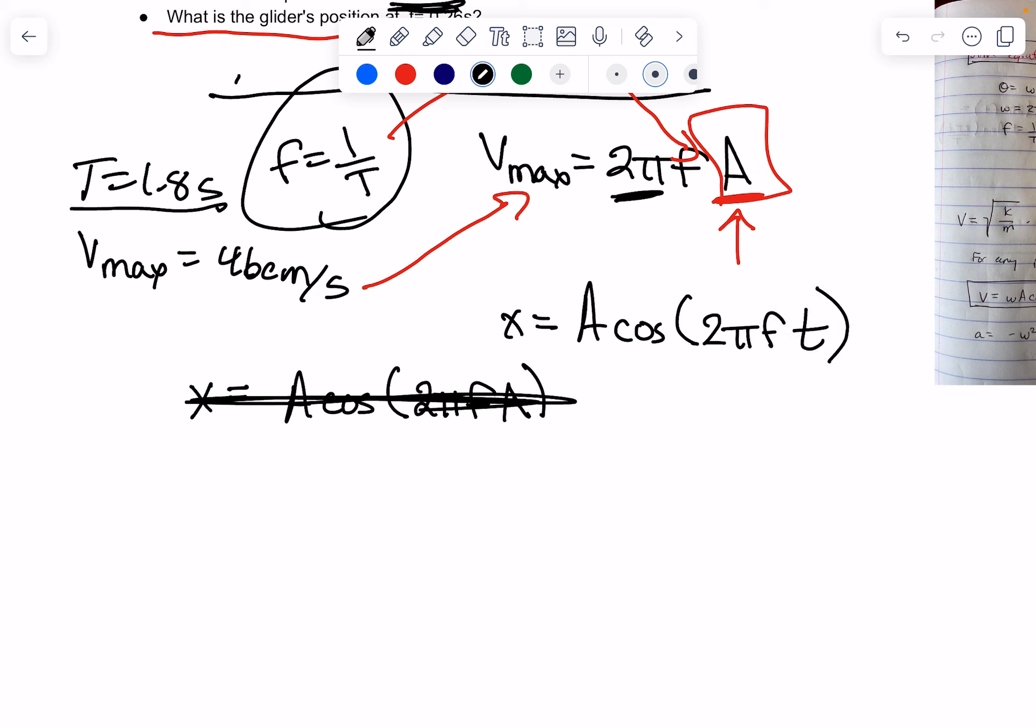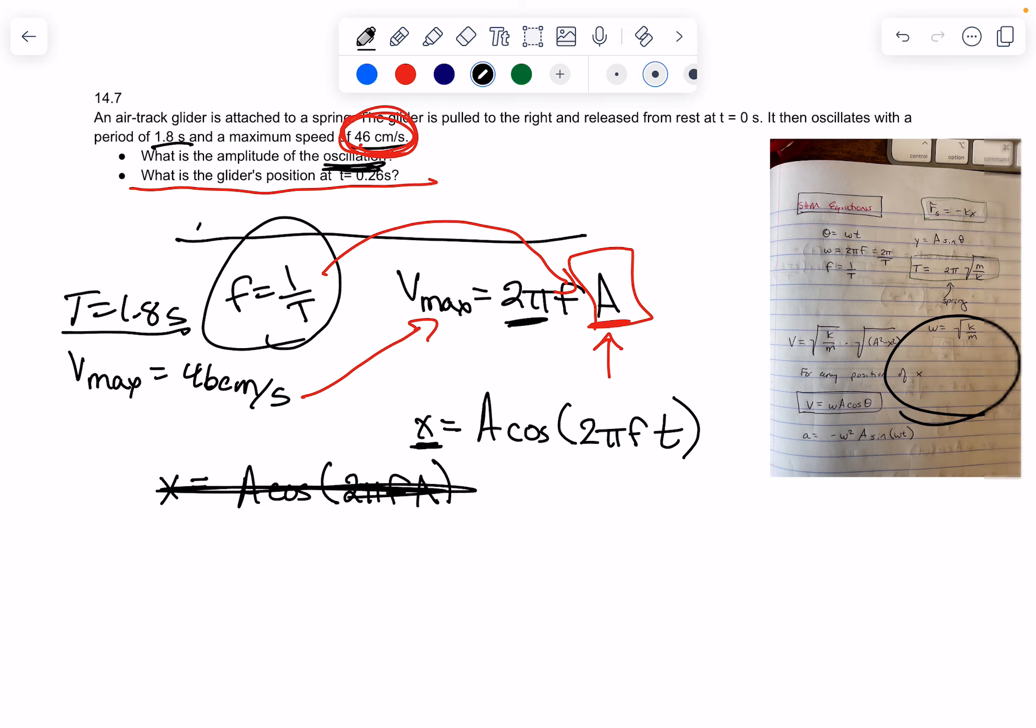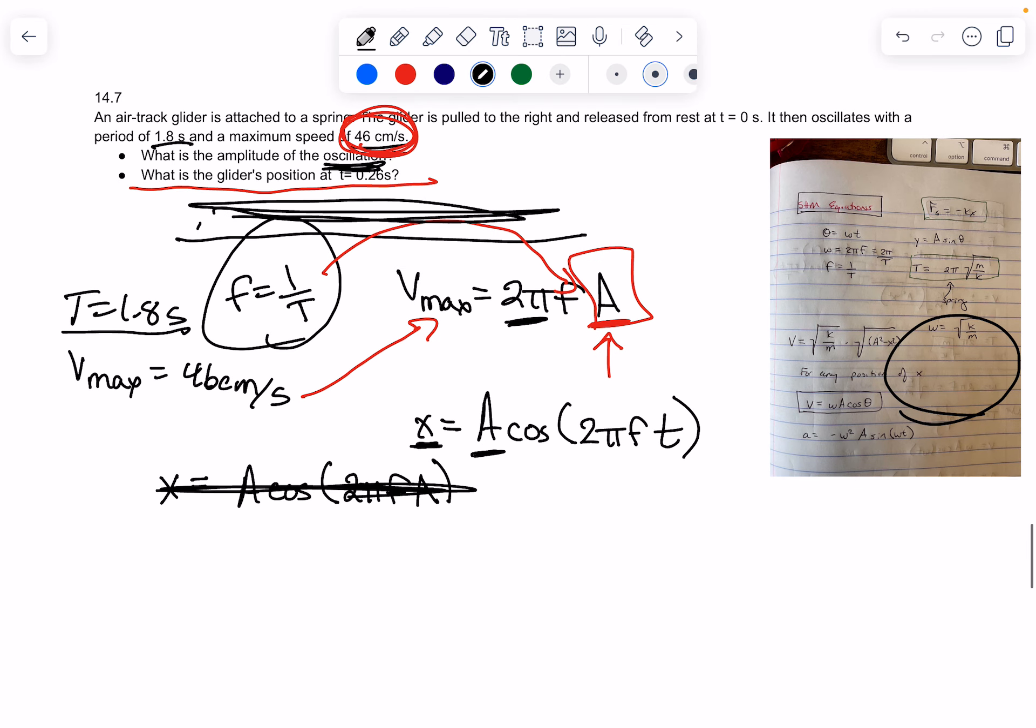And so, you're just, where is it on the, you know, moving back and forth, as it moves back and forth and back and forth? You know A from the previous part, cosine, of course, 2 pi. The frequency, we've solved for the frequency here. And in this case, the time was given as 0.26 seconds. And then you can solve for x.